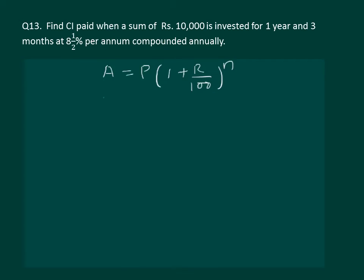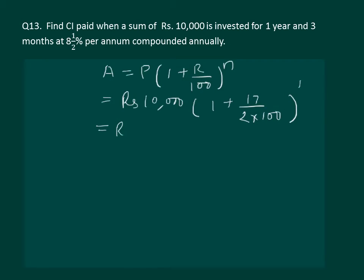Let's start by calculating compound interest for the whole part of the time, that is one year. We substitute principal rupees 10,000 and rate eight and a half percent, which can be written as 17 by 2. On solving, the amount after one year comes out to be rupees 10,850.